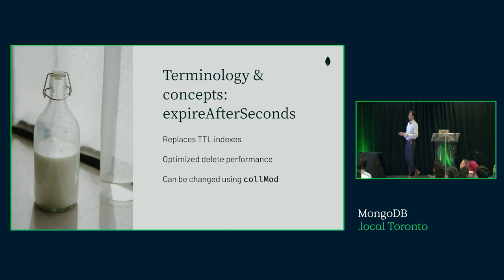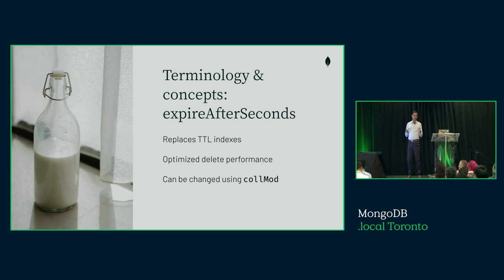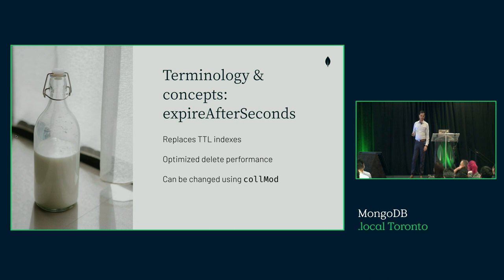The expire after seconds setting works similarly to MongoDB's time-to-live indexes — it defines that after this many seconds, delete this record. This allows you to clean up your collections because a lot of IoT data is only useful for a certain period, like the last 30 days or one week. This setting will automatically delete the data after that time period efficiently.